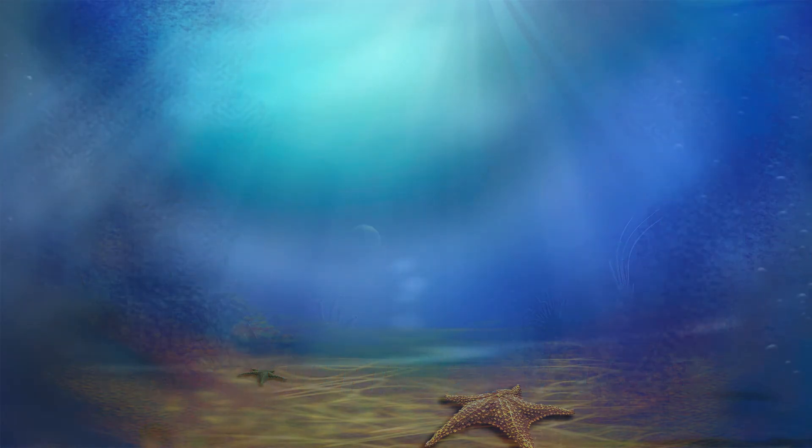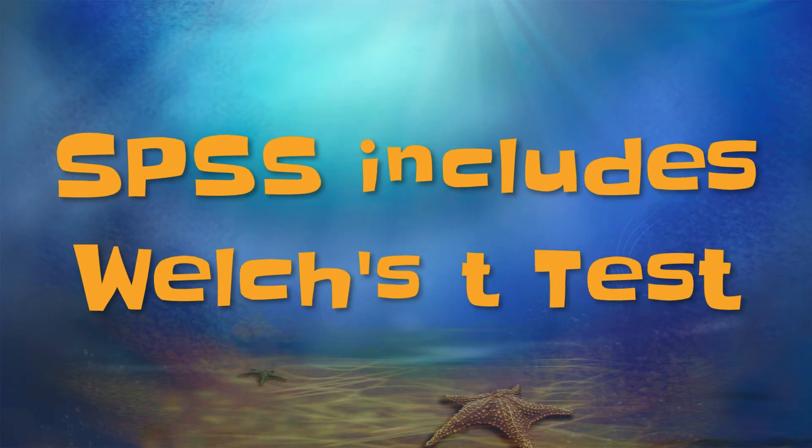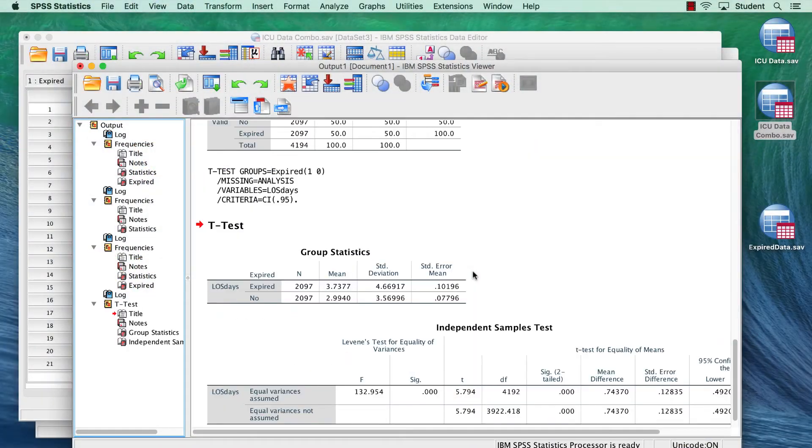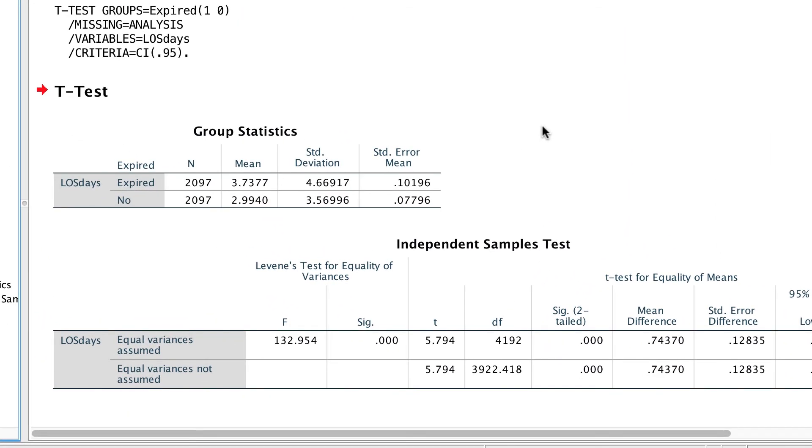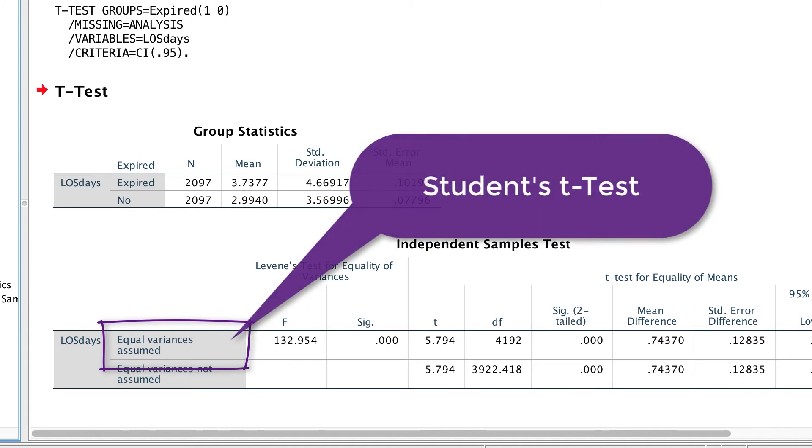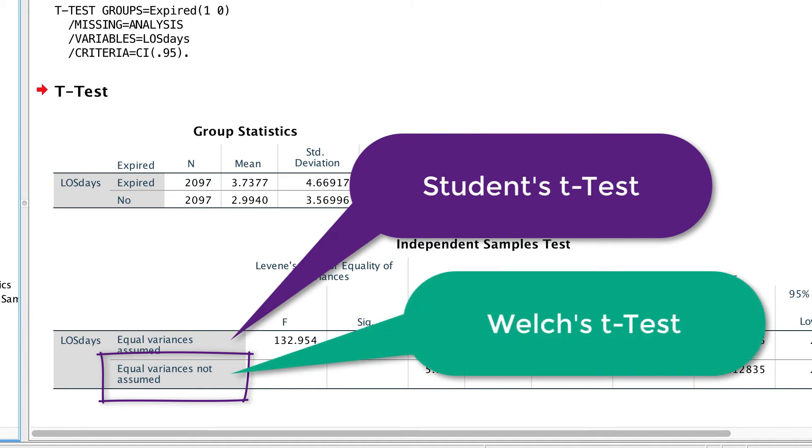If you use SPSS, you are already using Welch's t-test, whether you know it or not. In any SPSS output for an independent samples t-test, you get two lines to interpret. The top line says equal variances assumed. That is student's t-test. The second line says equal variances not assumed. That is Welch's t-test.